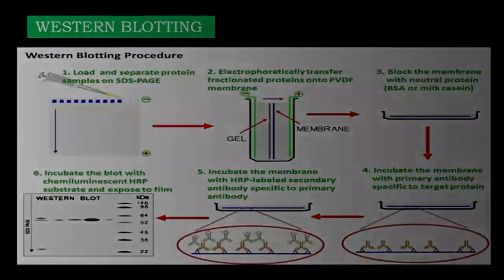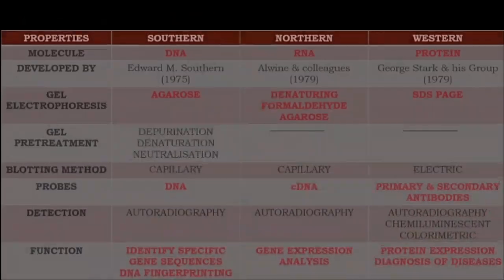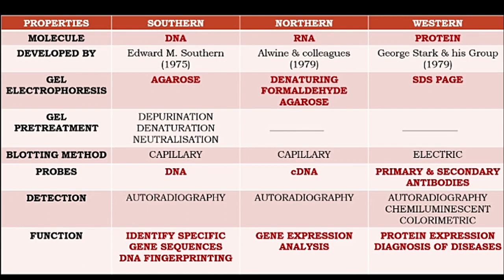Now let's come to the most important slide of today's lecture. This slide will help us analyze the types of blotting in the shortest time and summarize what we have covered today. The molecule used in Southern blotting is DNA, in Northern blotting it is RNA, and in Western blotting it is protein. For gel electrophoresis: Southern uses agarose, Northern uses denaturing formaldehyde-agarose — formaldehyde is used to prevent hydrogen bonding between complementary mRNAs — and Western uses SDS-PAGE.